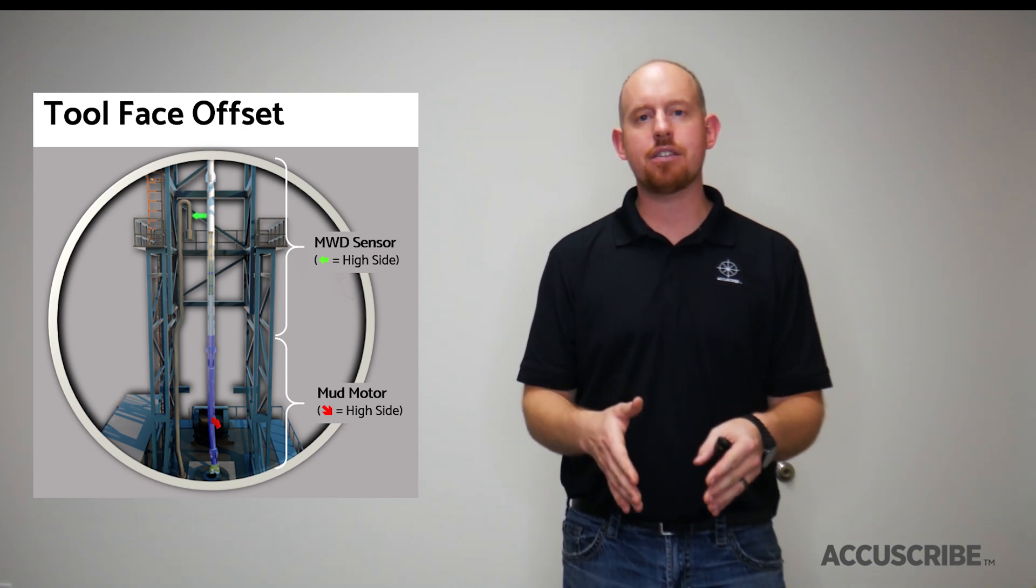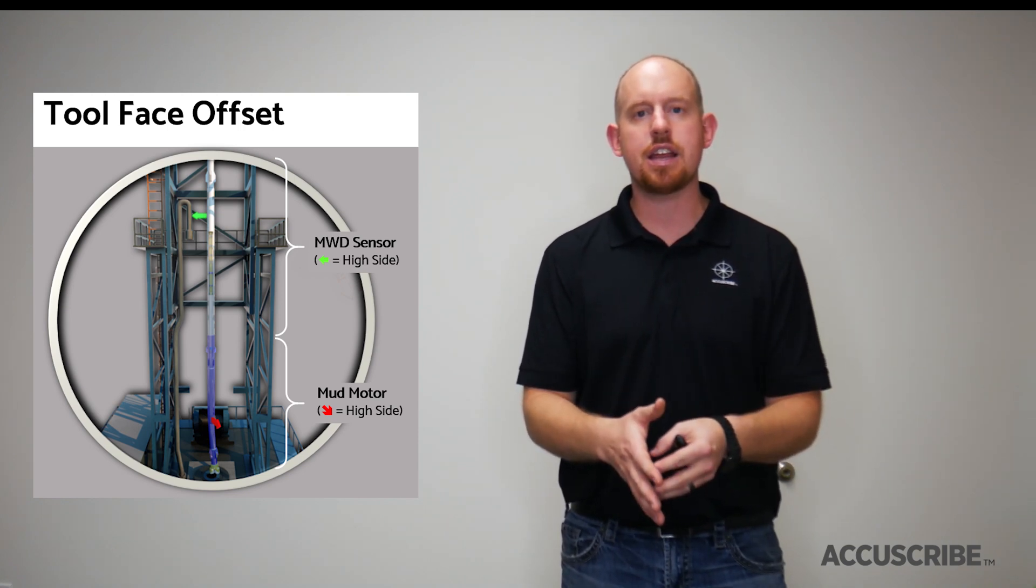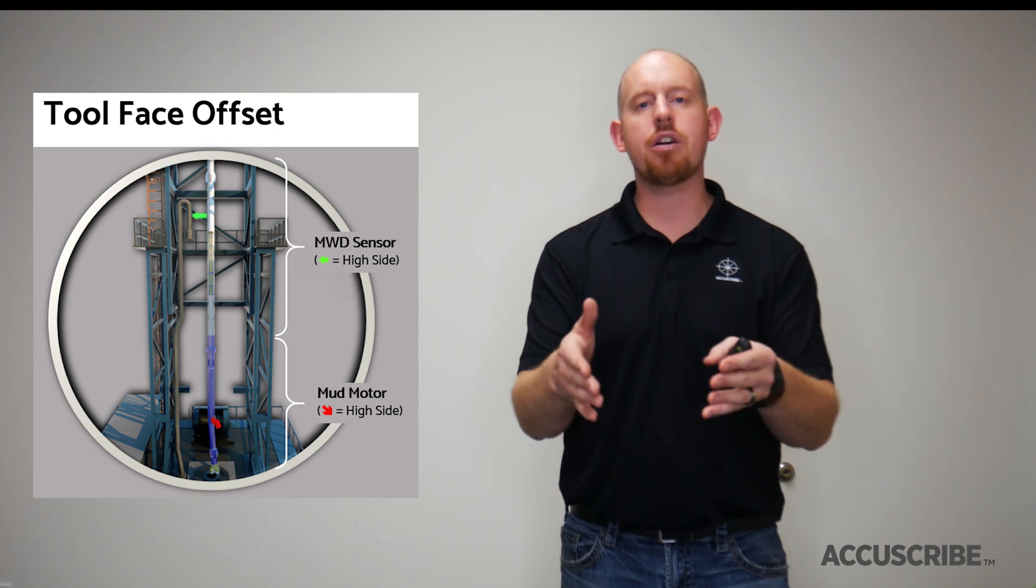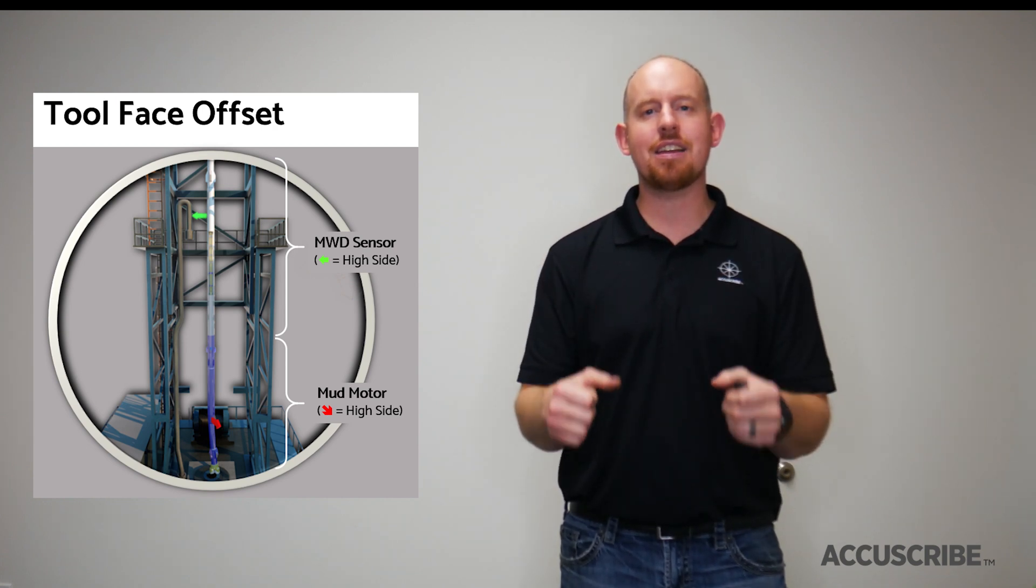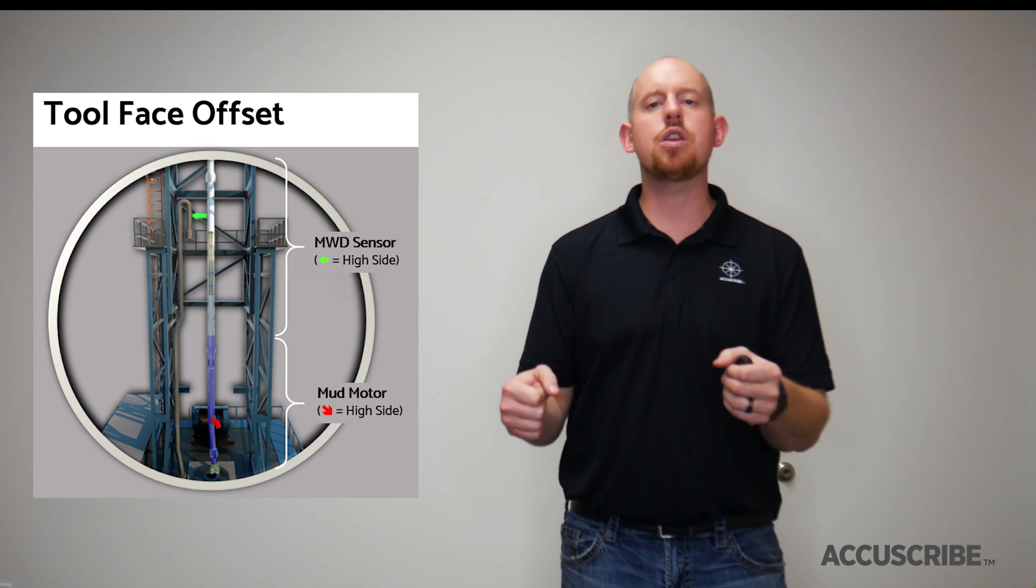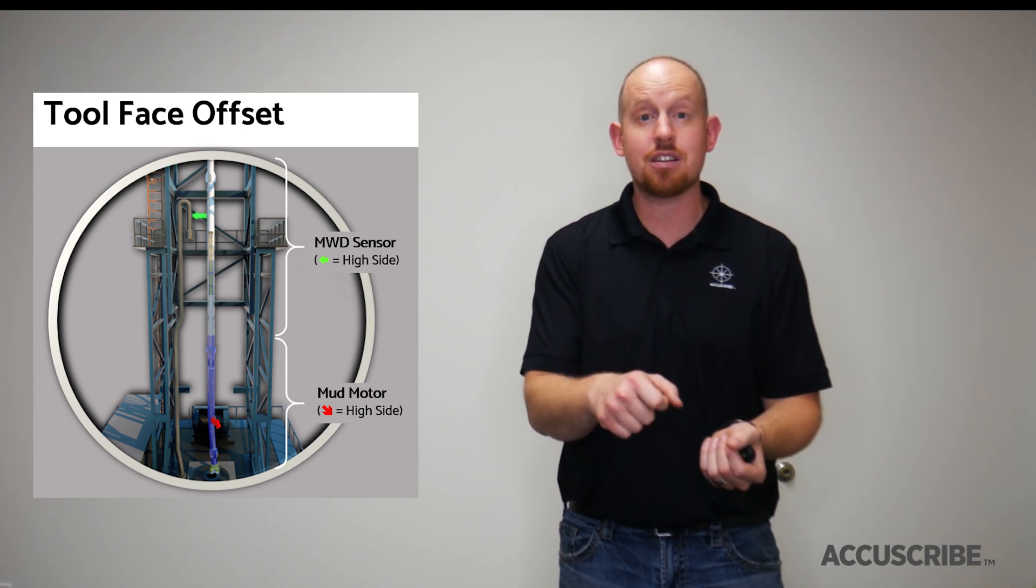A really simple analogy of what a tool face offset is, is an alignment on your vehicle. So we want to align the steering wheel so that when you want to steer left, you actually steer left.